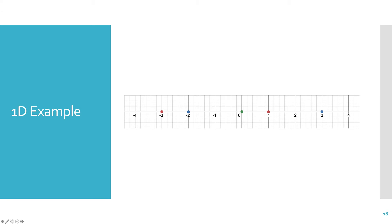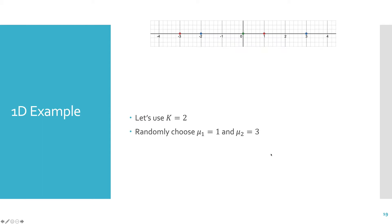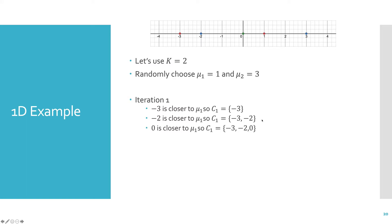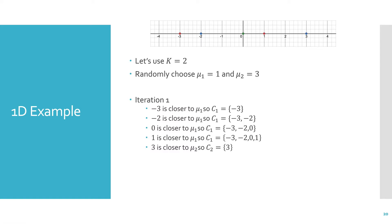Let's run through an example to get the hang of it. Here we have one-dimensional data: the points negative 3, negative 2, 0, 1, and 3. I'm going to choose K equals 2, and randomly assign mu 1 to 1 and mu 2 to 3. Going through iteration 1 from left to right: negative 3 is closer to mu 1, negative 2 is also closer to mu 1, 0 and 1 are also closer to mu 1, so cluster 1 has 4 points. The point 3 is closer to mu 2, so cluster 2 has the point 3.